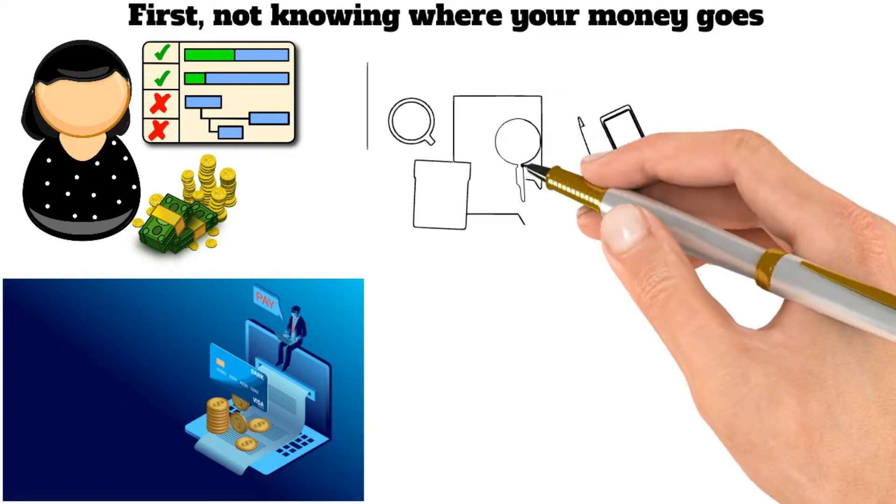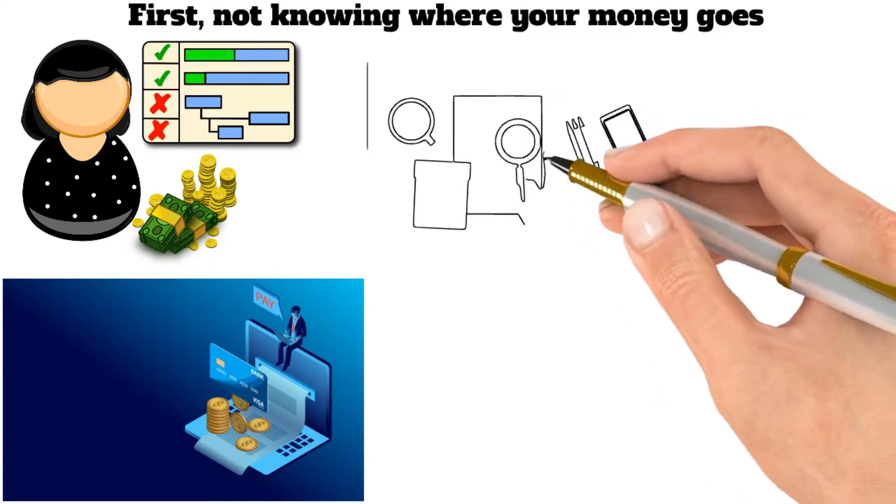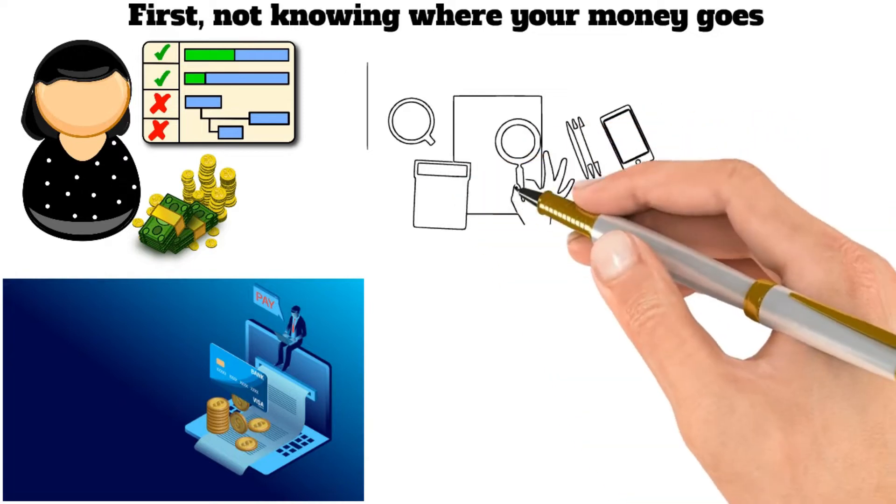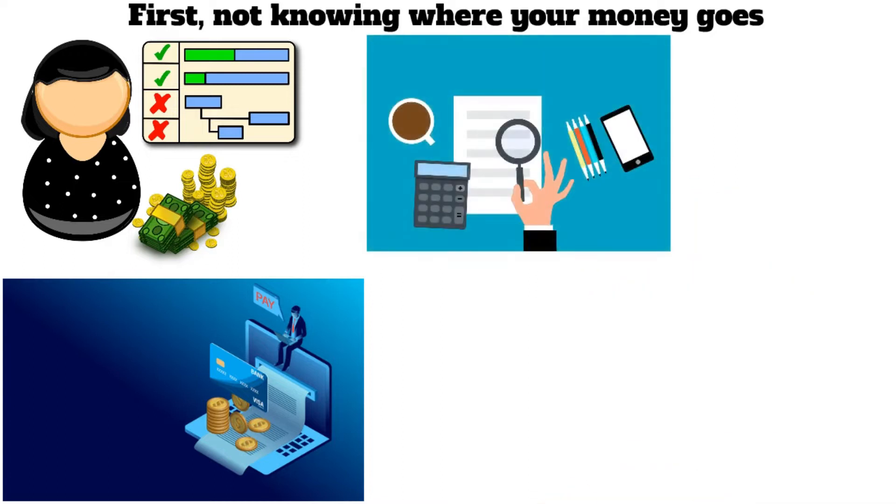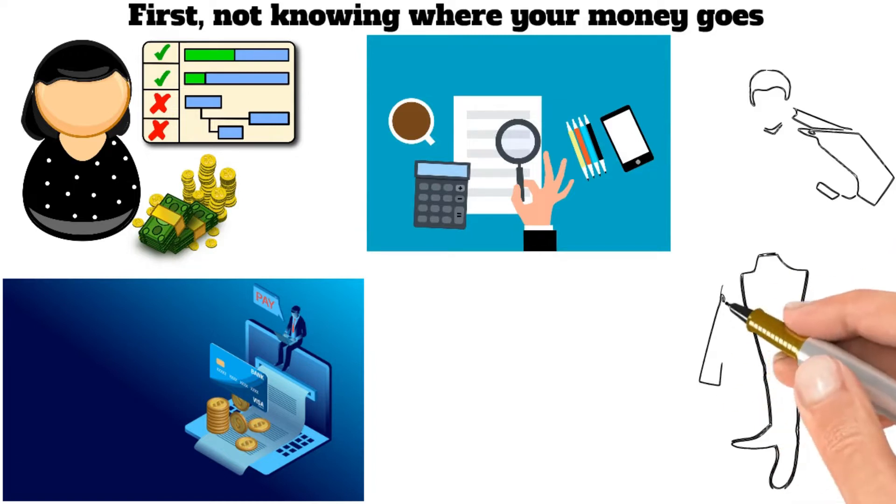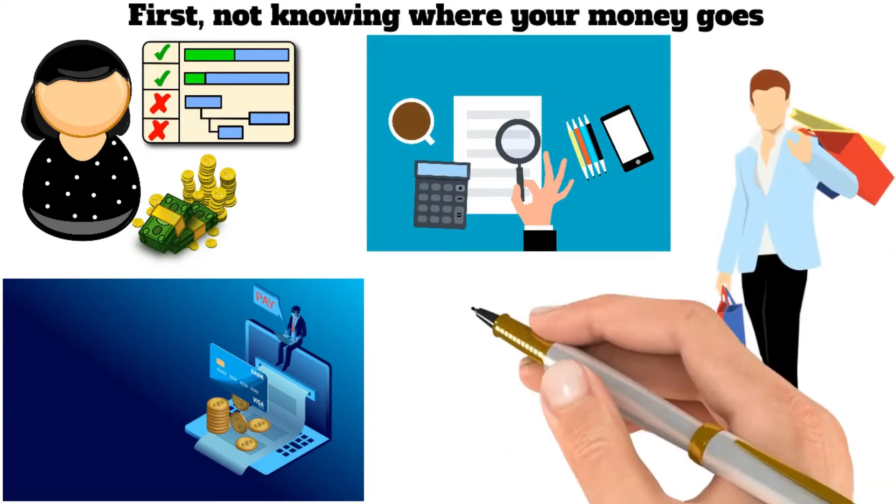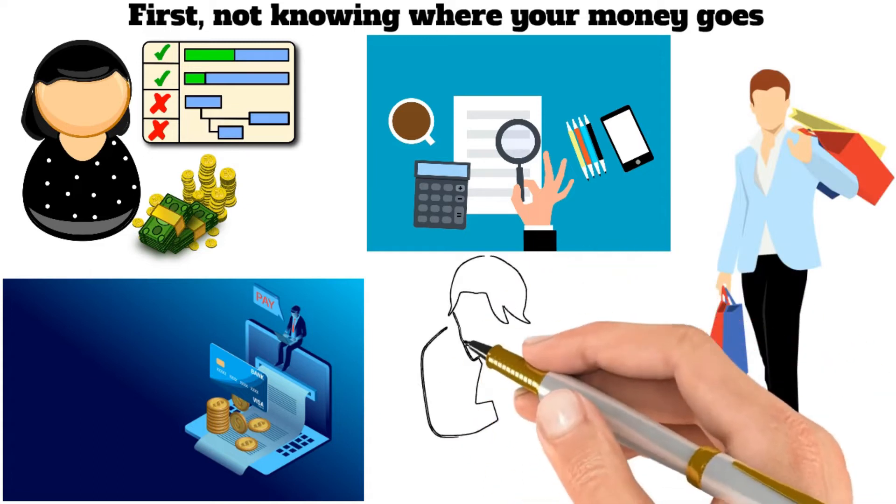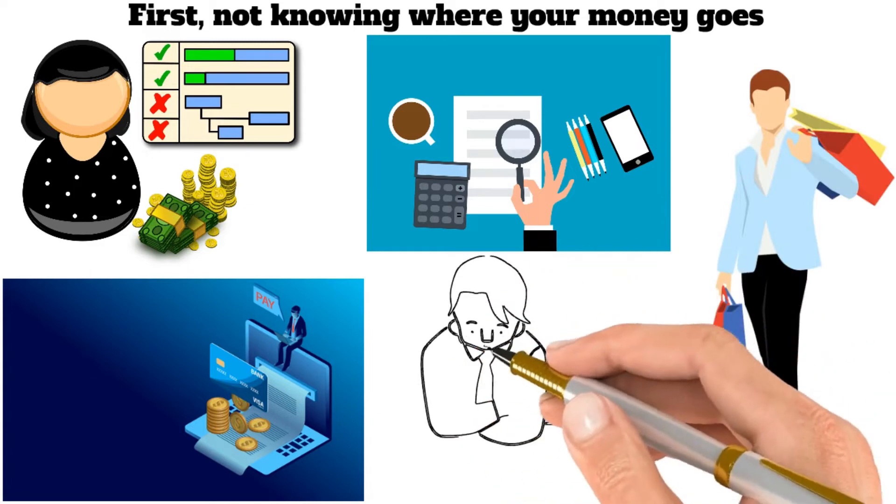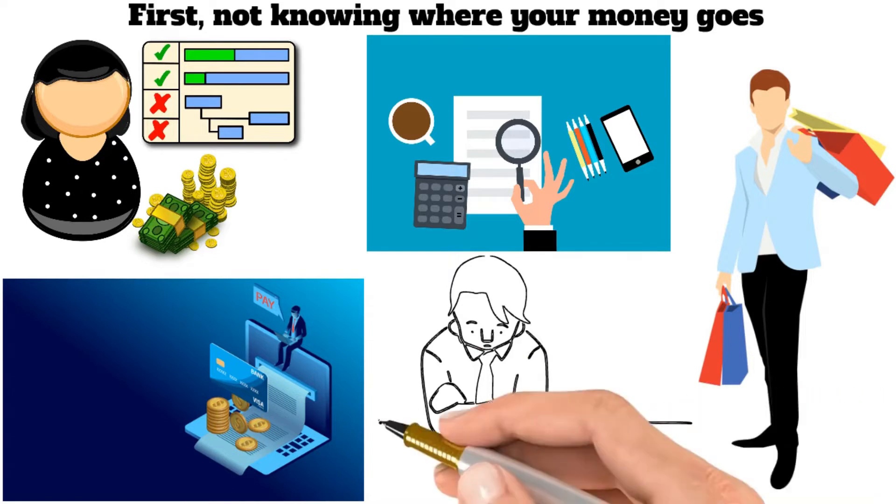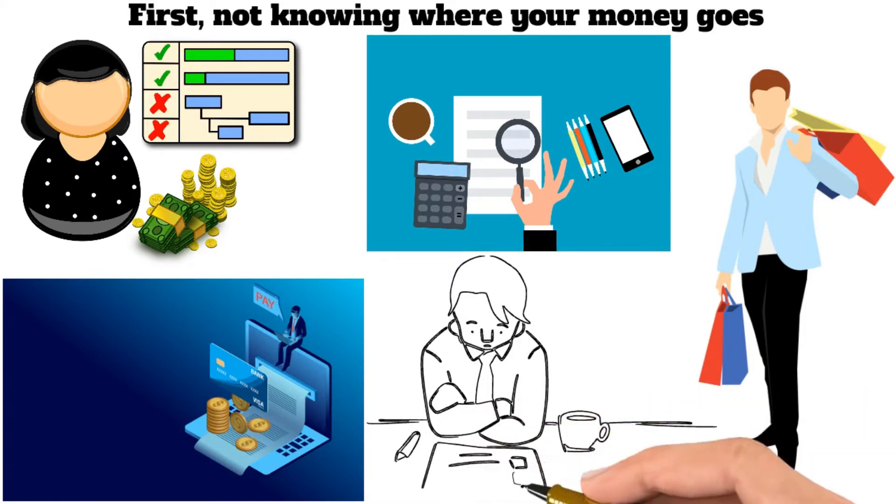If you don't know where your money is going, it's hard to make informed decisions about how to save and budget. You may be inadvertently overspending in certain areas or missing opportunities to put your money towards savings or investments. Tracking your spending can help you better handle your finances and ultimately help you make better decisions about your money.